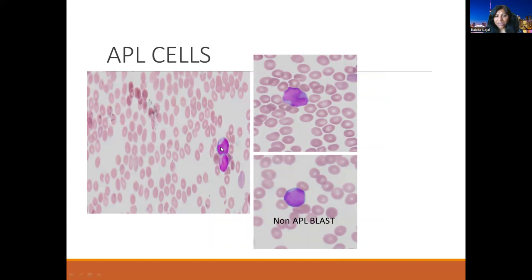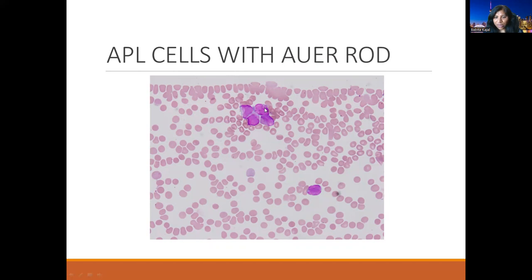Very rarely, we see pancytopenia and these kind of abnormal-looking cells. Here we can see a reniform, folded nucleus with high N:C ratio and big prominent nucleoli. This is also a dumbbell-shaped nucleus. These are APL cells — acute promyelocytic leukemia. This is again a critical value because these patients can develop DIC very quickly, so the clinician needs to be informed as soon as possible. Compared to these APL blasts, a non-APL blast doesn't have a reniform nucleus but does have a central nucleolus and high N:C ratio.